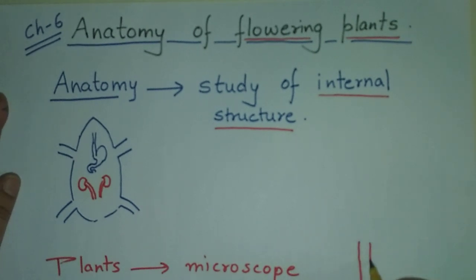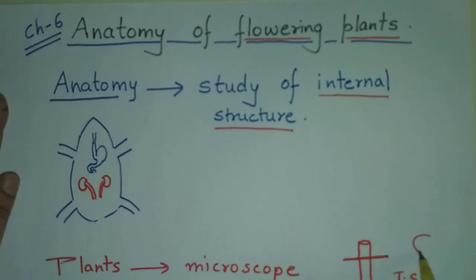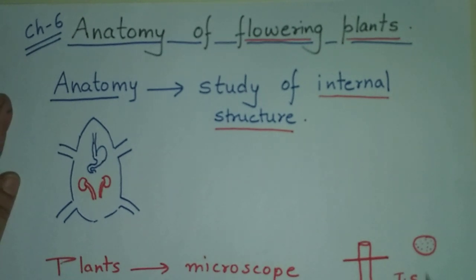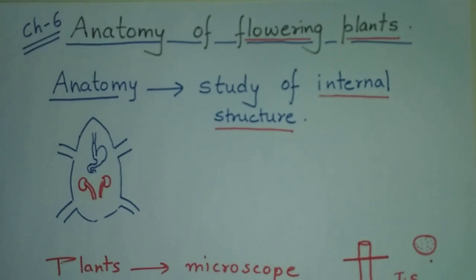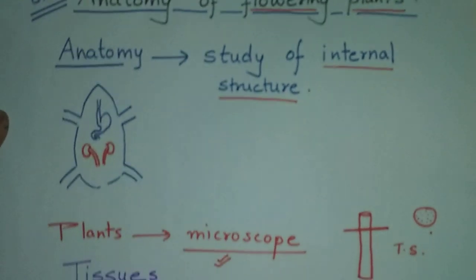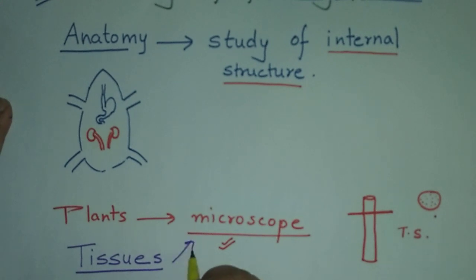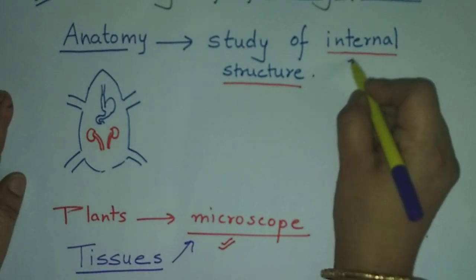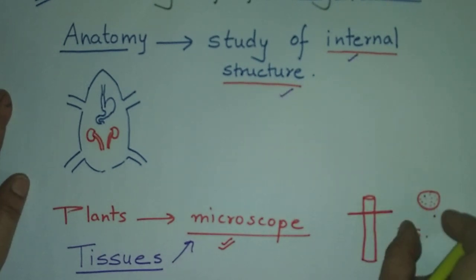If we have taken a stem and we are cutting a transverse section, we cannot see anything with the naked eye. We are not able to see the structure properly or differentiate between different tissues just by looking at the transverse section of a stem. So we require a microscope, and this means we are going to study the tissues of plants using a microscope.